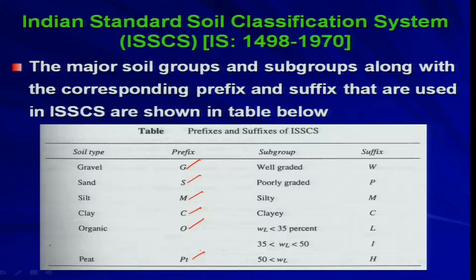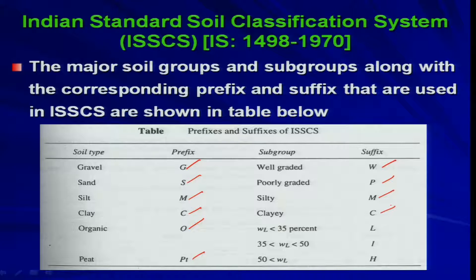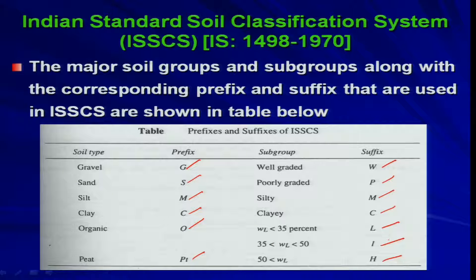The subgroup suffixes indicate gradation and plasticity characteristics: well-graded is W, poorly graded is P, silty is M, and clayey is C. For fine-grained soils, the liquid limit determines the suffix: if the liquid limit (w_L) is less than 35%, the suffix is L — denoting low plasticity; if it is between 35% and 50%, the suffix is I — indicating intermediate plasticity; and if it is greater than 50%, the suffix is H — denoting high plasticity.